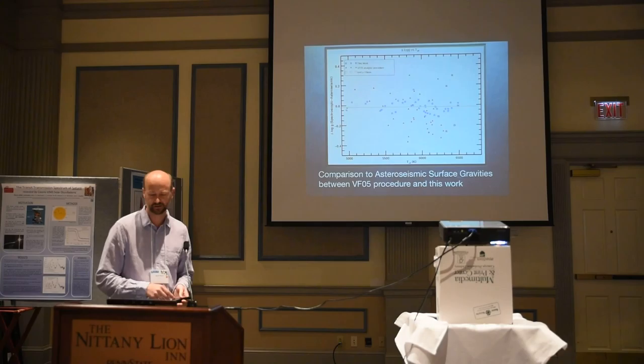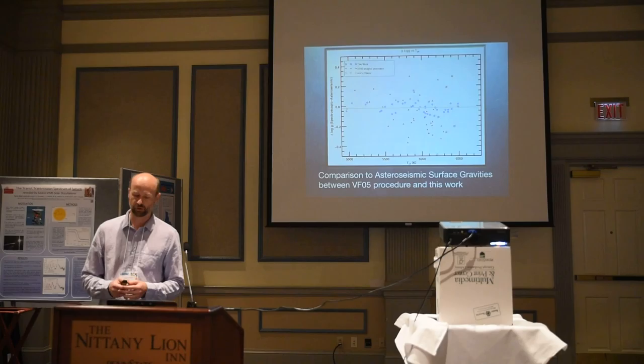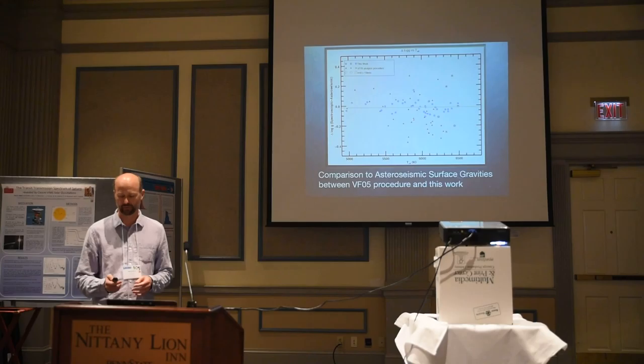The discrepant point at minus 0.2 dex is actually a fairly rapid rotator, greater than 25–26 kilometers per second. As we go to higher rotation speeds this breaks down, but for the most part we're doing a pretty good job.